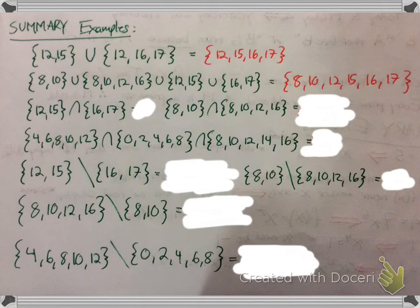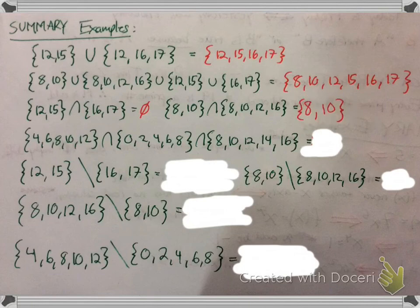Next, there are two intersections in this row. The first one: 12, 15, 16, 17 — there's nothing in common, so the answer is nothing. The next one would be just 8 and 10 — those are the only two things they have in common. Then, what do all three sets have in common? Even though two of them might share a commonality, what all three have is the number 8.